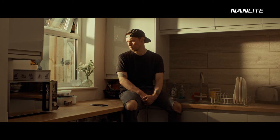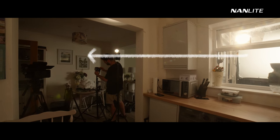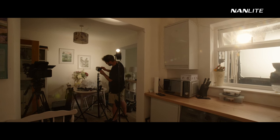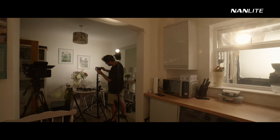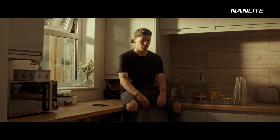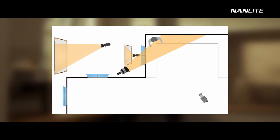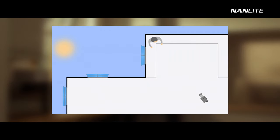Our image is really starting to come together — we could even add one final touch. We already have some bounce on the wall from the 6x6 bounce, but we could boost this a little with another Forza 60C, and we could even cool down the colour temperature in comparison to our other lights. The very subtle cooler lift in the shadows creates some more realism to our ambient, as in reality we may have some more influence from the cooler sky entering the room from another window.